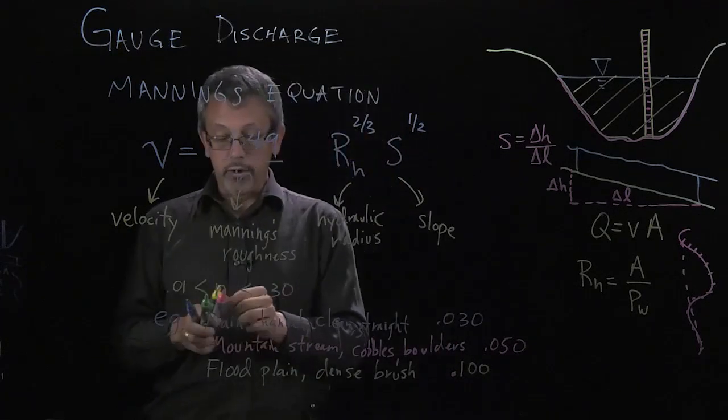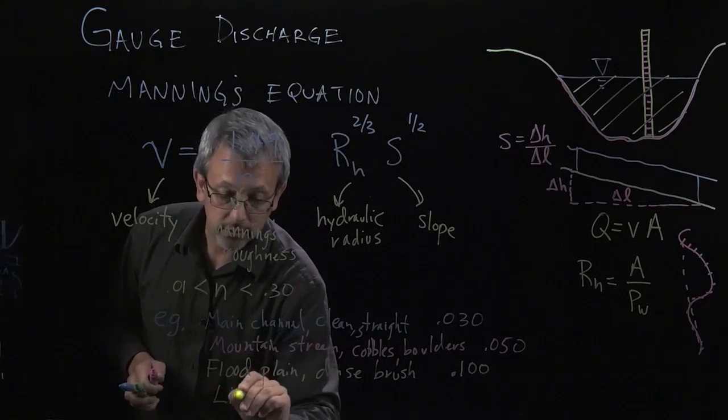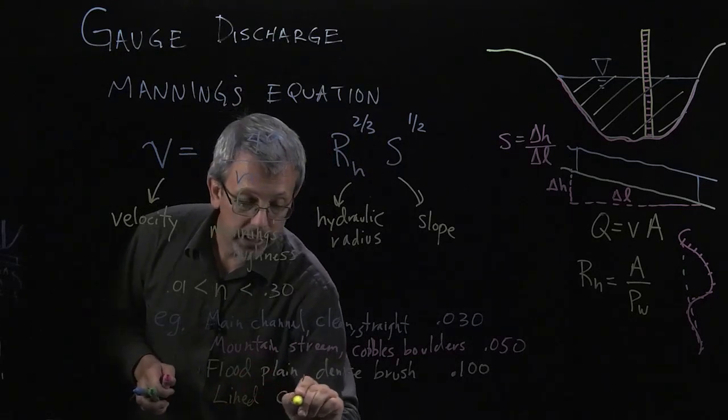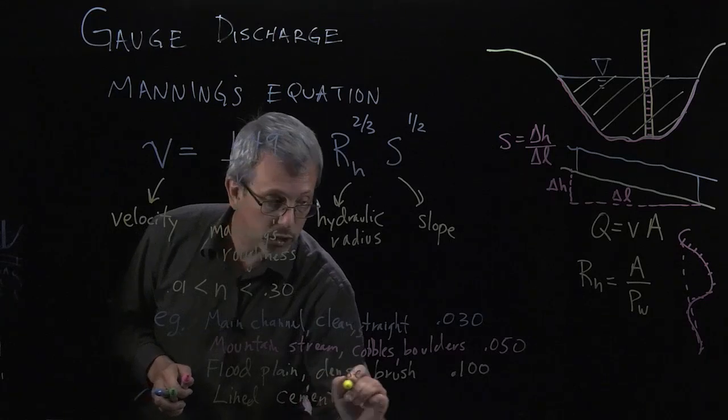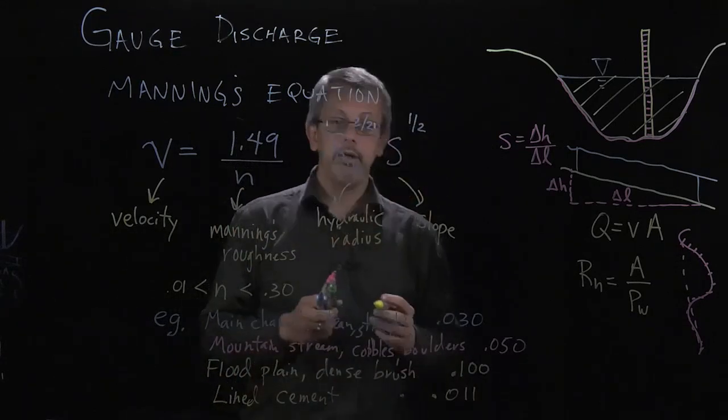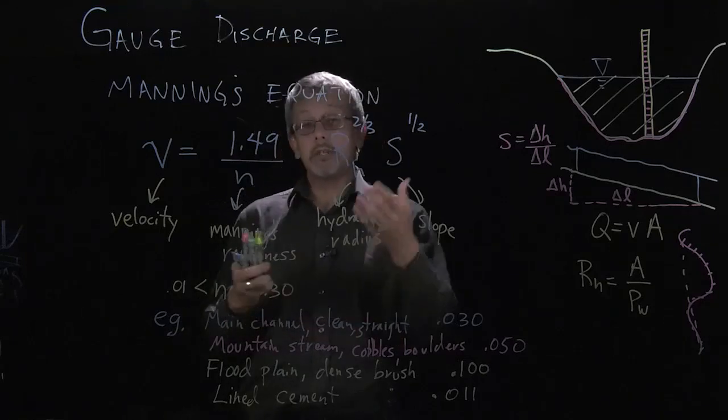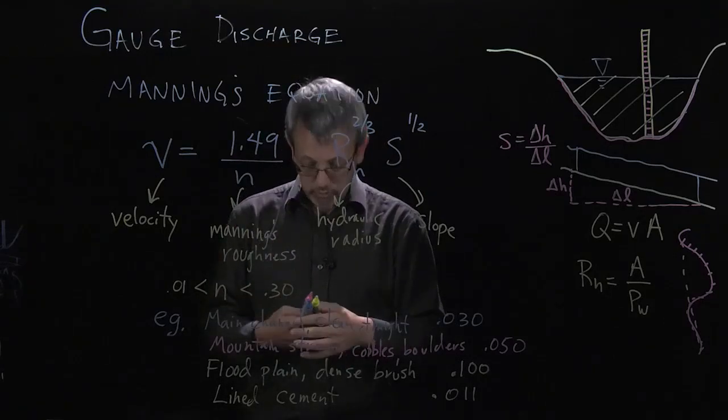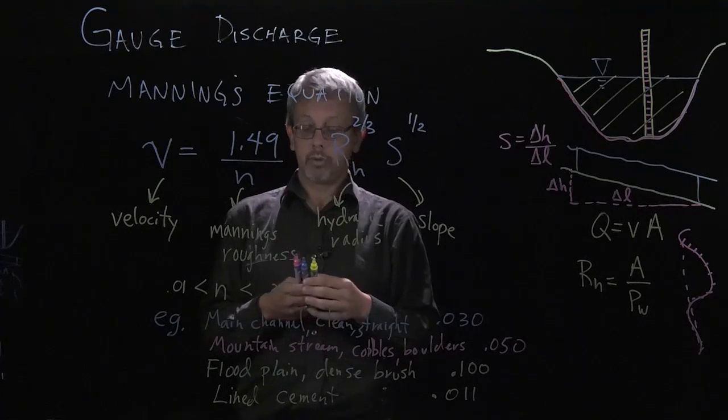Whereas if you went in the other direction and you had some lined cement, you had a very nice cement surface raceway, very minimal 0.011 might be your Manning's roughness. So you can see that there's a variety of these roughness values that are used here, these coefficients.